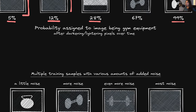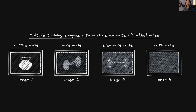First we need to obtain a training set, and for this example our training set will consist of images of gym equipment. We'll go through the process of adding various amounts of noise to these images, ranging from just a little bit of noise to so much noise that we can't even see the hidden image underneath. We've illustrated this here with several images of gym equipment — on the left just a little bit of noise where we can make out a kettlebell, then progressively more noise, until one image has so much noise that we can't tell what the original image is underneath.